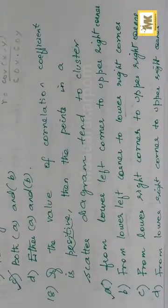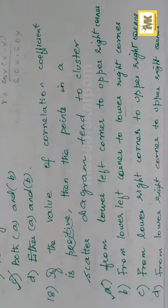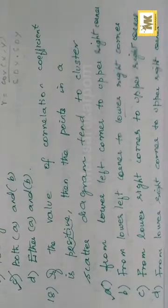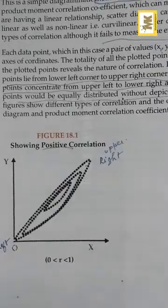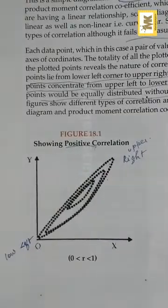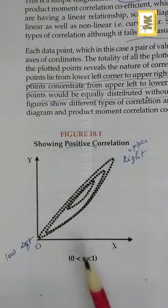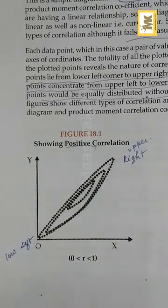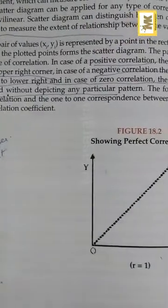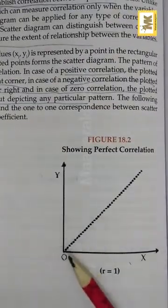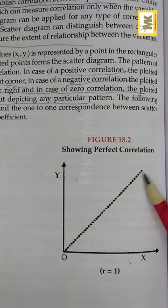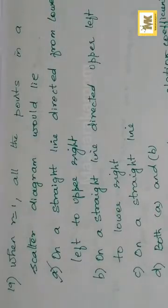If the value of the correlation coefficient is positive, the points lie from lower left corner to the upper right corner. Lower left to upper right — correlation is positive. When r is equal to 1, the scatter diagram is a straight line from lower left to upper right.